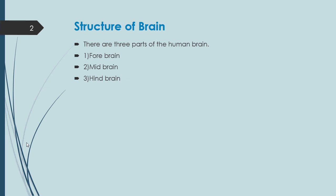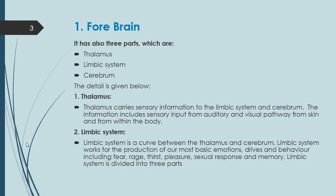Let's start the topic: structure of the brain. There are three parts of the human brain. Number one: forebrain. Number two: midbrain. Number three: hindbrain. The forebrain is very important to discuss right now because forebrain has three more parts — number one: thalamus, number two: limbic system, number three: cerebrum.